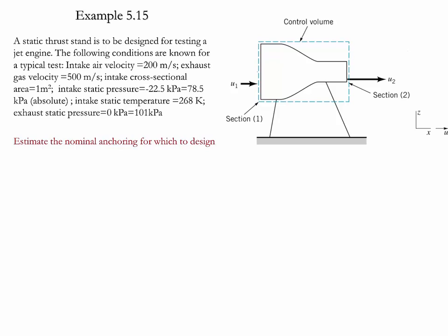The intake velocity is 200 meters per second. The exhaust gas velocity is 500 meters per second. The intake cross-sectional area is one meter square. The intake static pressure is equal to negative 22.5 kilopascals. The intake static temperature is equal to 268 kelvins. The exhaust pressure is equal to zero kilopascals.